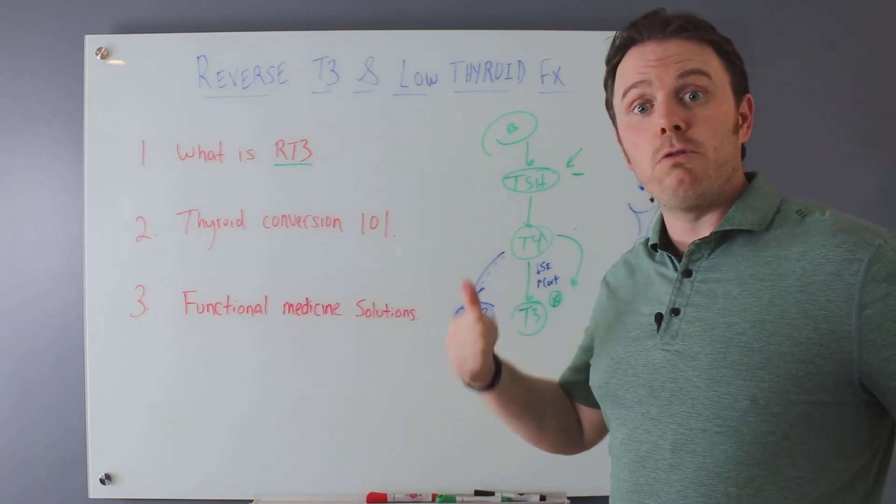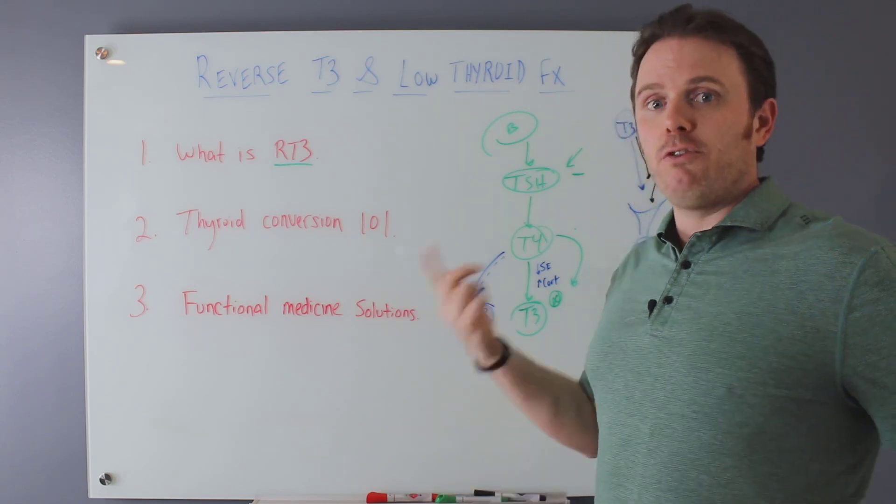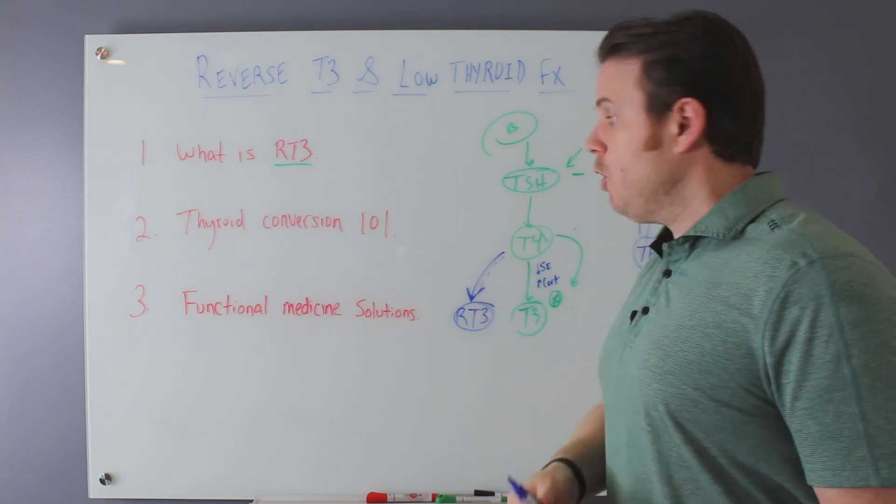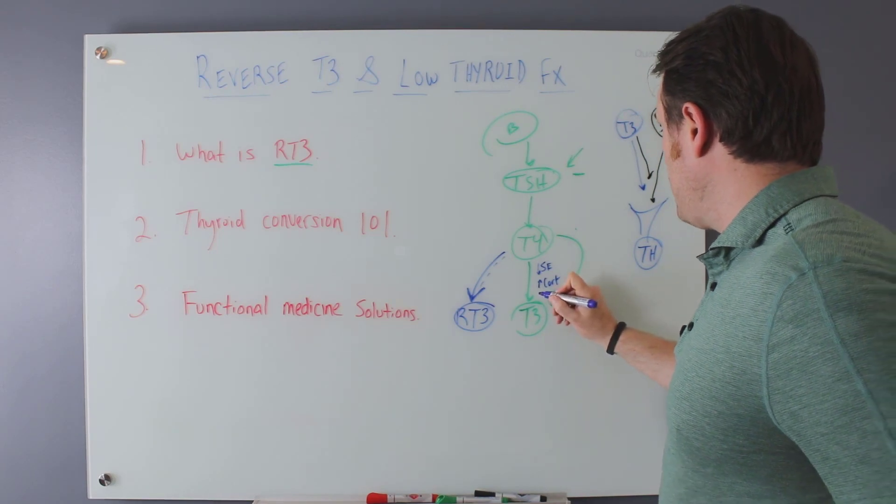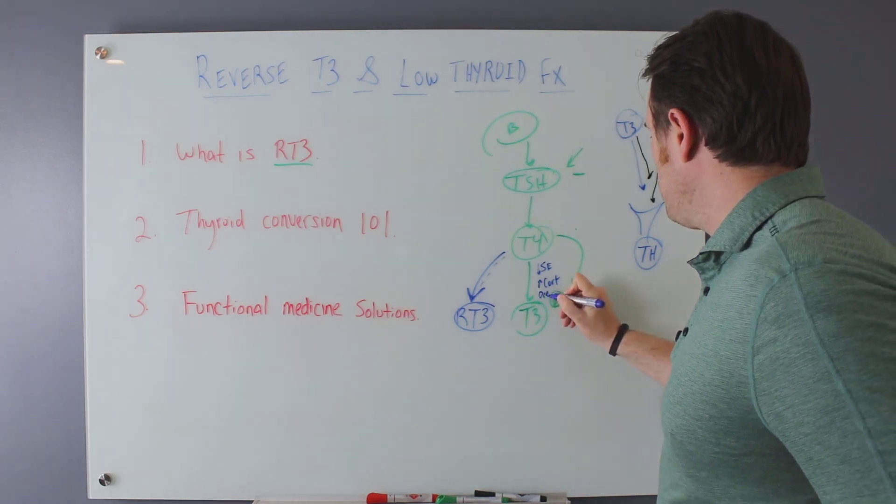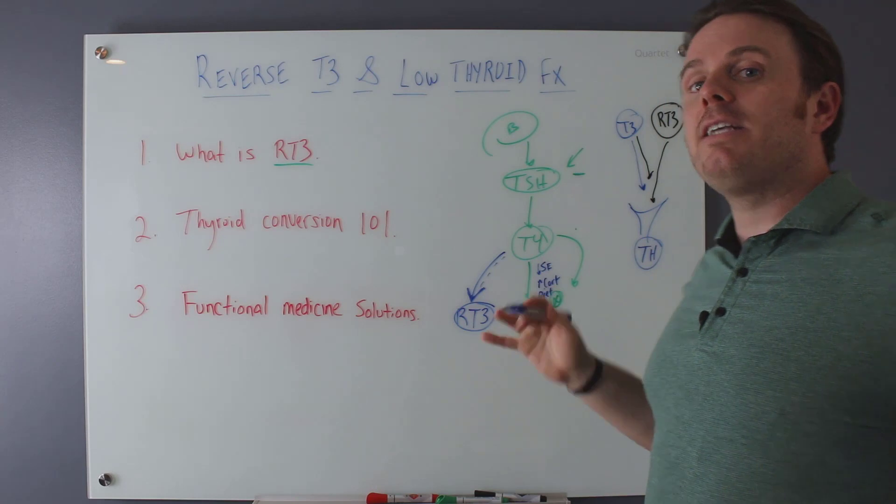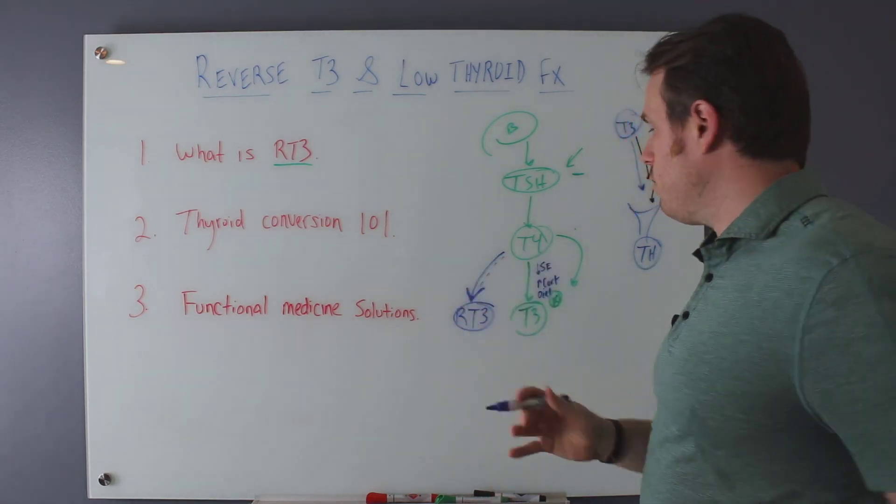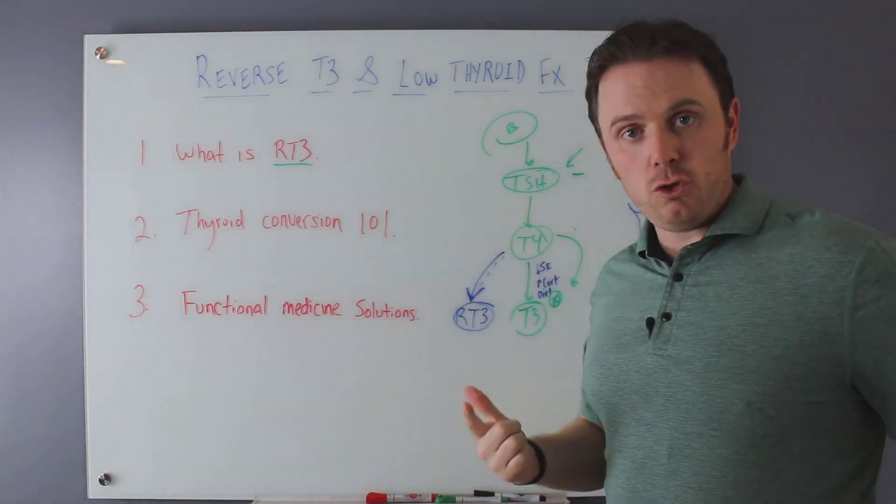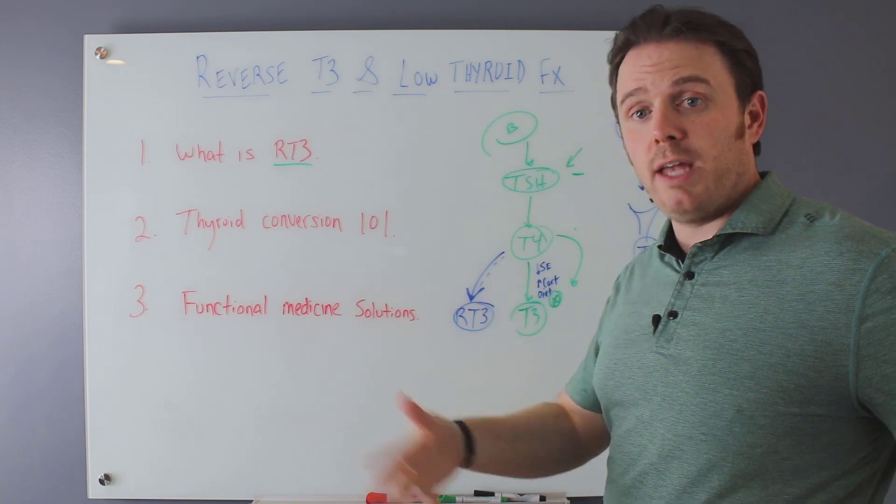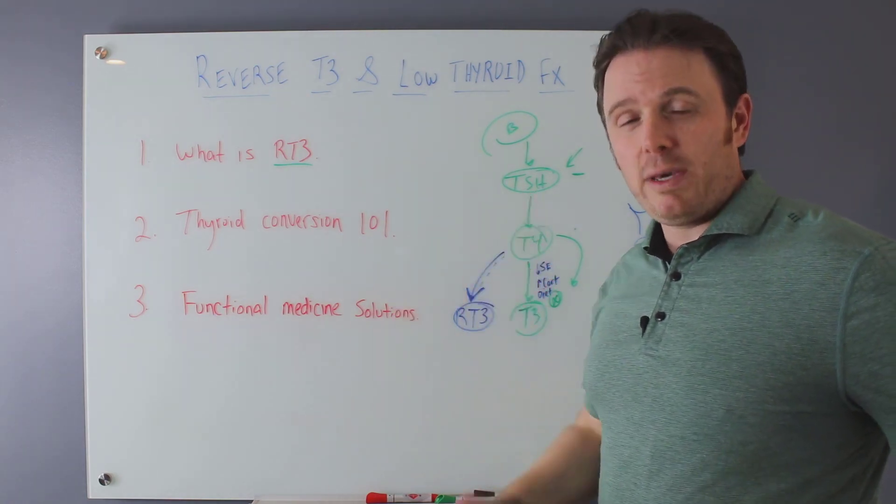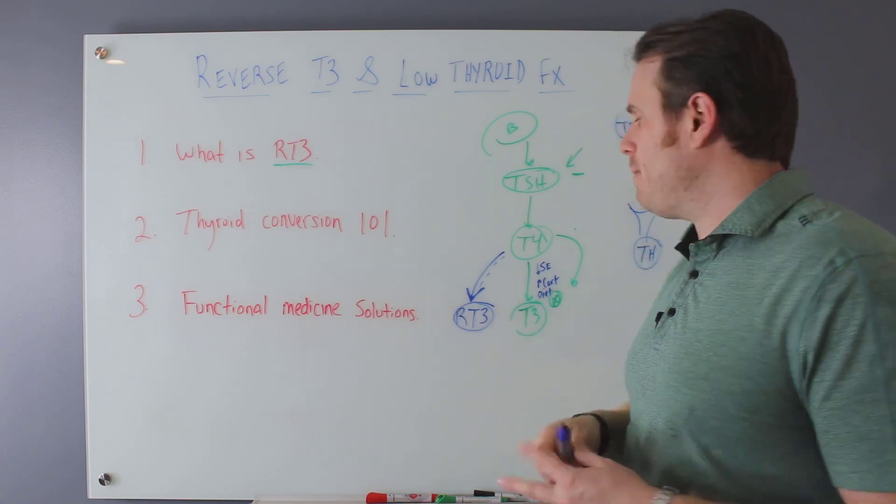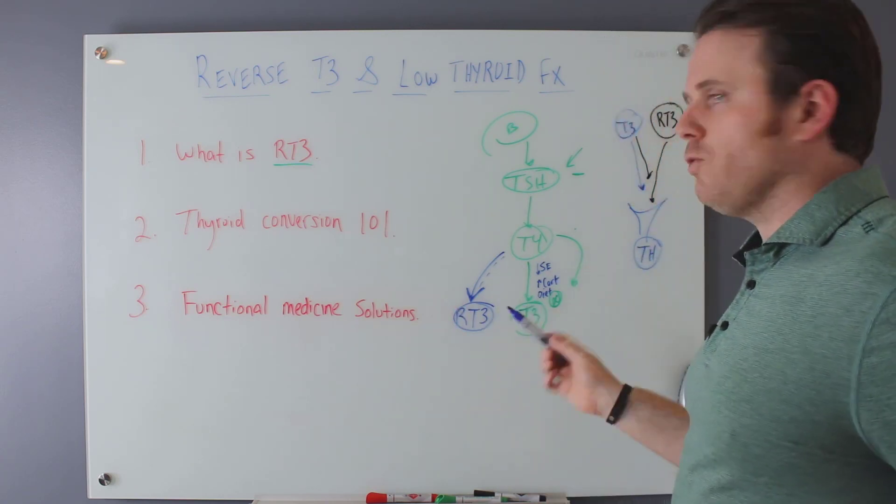We're also going to have stress from low calorie dieting. If we're dieting and we're doing low calories, we're going to see an increase in reverse T3 from low calorie. So from diet. So these are all big stressors that could be affecting thyroid conversion. So selenium, liver stress, which would then cause more cortisol issues, and then also low calorie and then low selenium. These are going to be the big factors that are going to affect reverse T3.